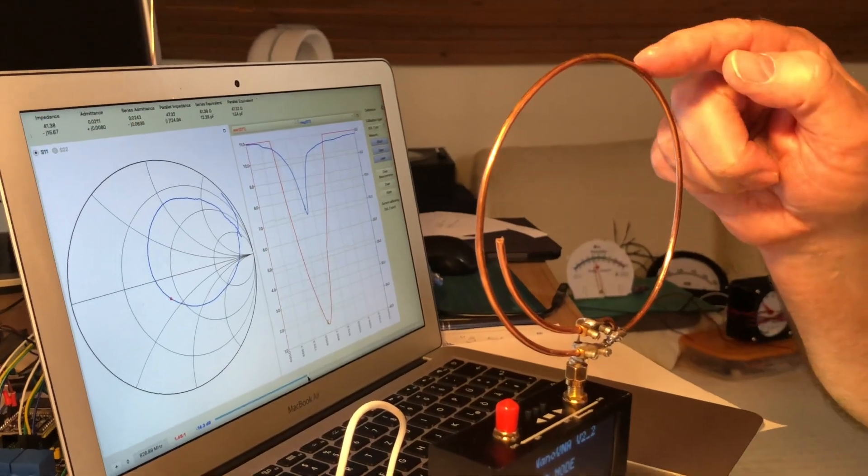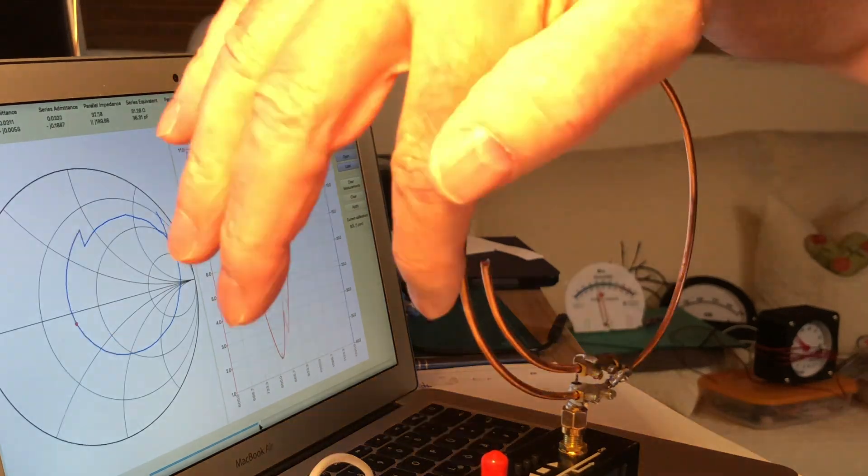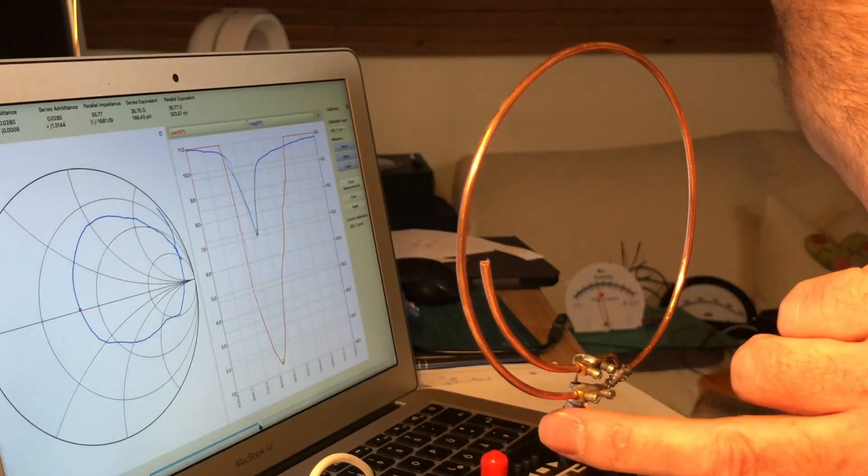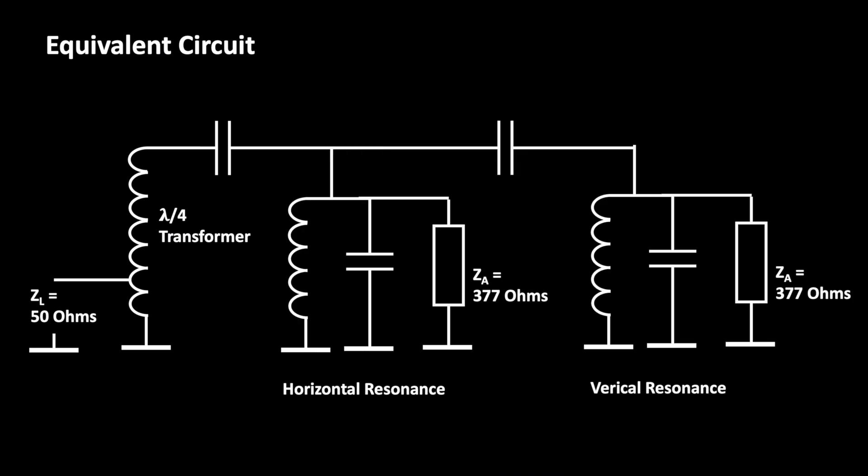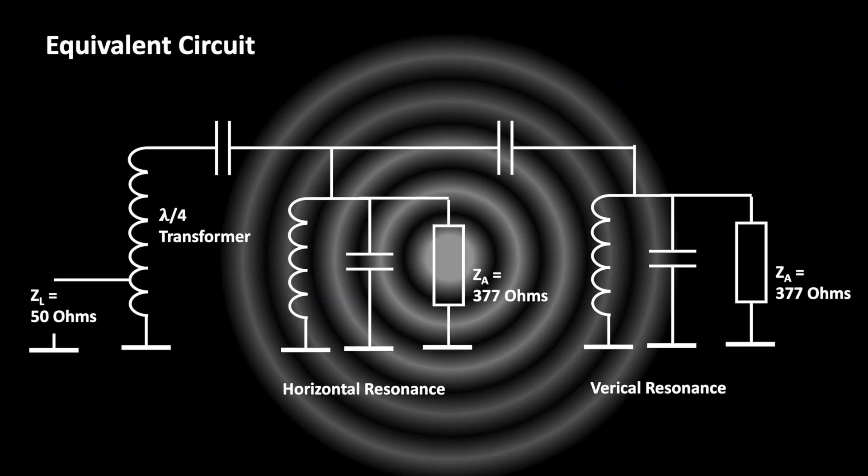This is a short lesson about RF engineering. We are explaining the equivalent circuit diagram for a DIY loop antenna. It helps us for both the understanding and the tuning.